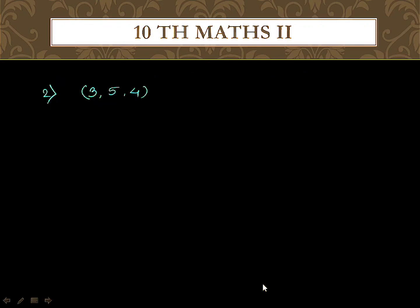Using the same method, the next question is: 3, 5, and 4. Is this a Pythagorean triplet? You can decide by using the previous principle.